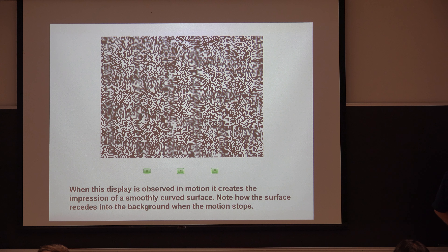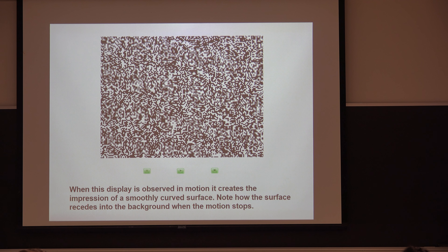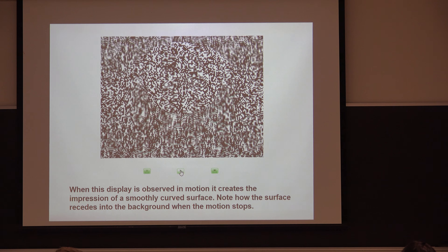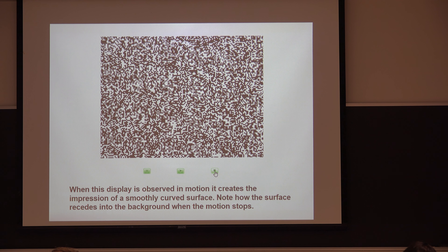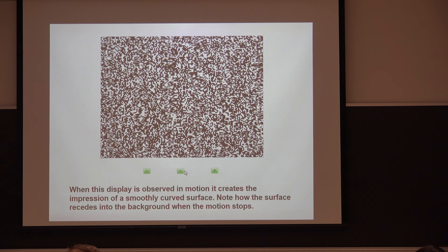A student describes what they see as a barcode-kind-of image. If told it's a 3D surface, they wouldn't believe it. But as soon as it moves, the 3D structure pops out. And the cool thing is when it stops, it fades back into nothing — until started again.